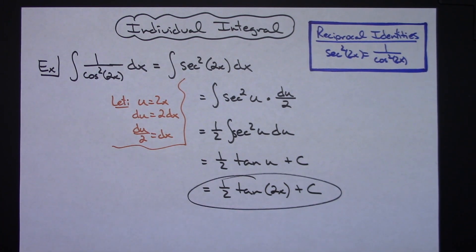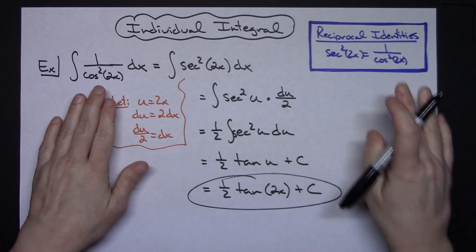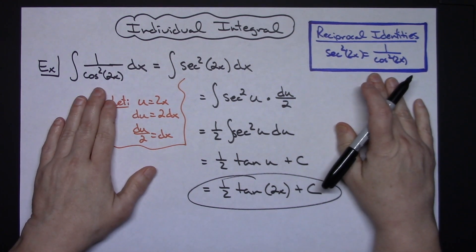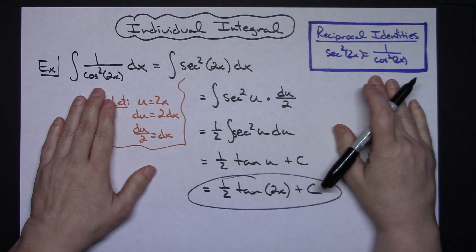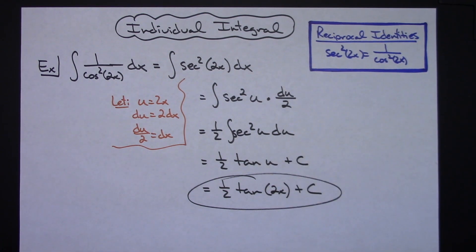So pretty straightforward u substitution integral there. Once you realize that, you've got to do that substitution with that reciprocal identity first before you start the integral.